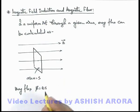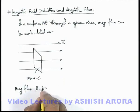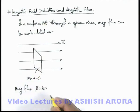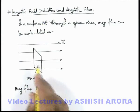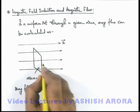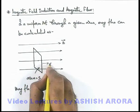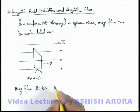Here we also define the magnetic induction as the flux density, so B can be written as phi divided by S, where phi is the flux passing through the area S.